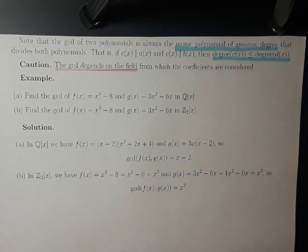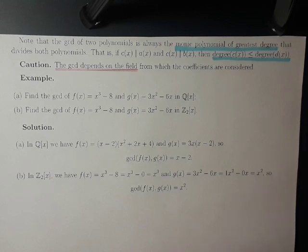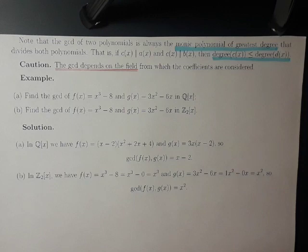However, if we think of the coefficients as being in Z2, then f of x is actually x cubed minus 0, since 8 is congruent to 0 mod 2, which simplifies to x cubed. And similarly, g of x is really x squared. So we're talking about the GCD of x cubed and x squared, which is just x squared. So the two GCDs are very different. When we say the GCD of a of x and b of x, we have to specify the field f that the coefficients are considered from.